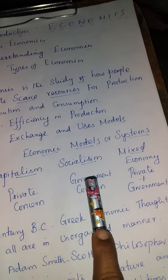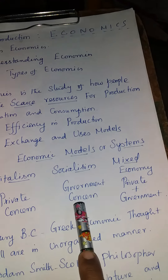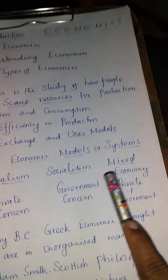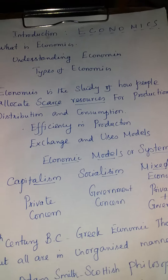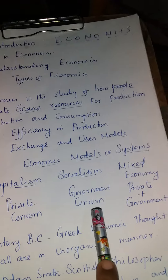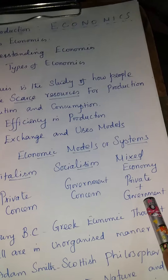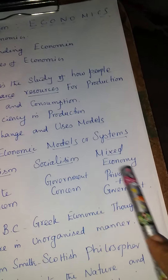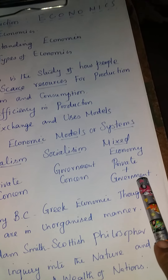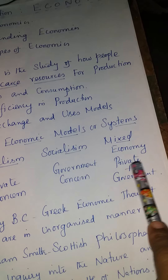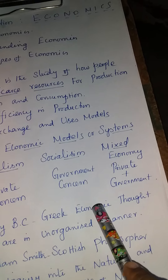Socialism countries give more importance to government concerns — Russia, for example, follows socialism. One more ism is communism — China follows communism. Mixed economy means some governments undertake both private and government sectors. That is collectively called mixedism or mixed economy. In India, private concerns and government concerns both exist — for example, in the education department, government schools and private schools are both there. India is the best example for mixedism.